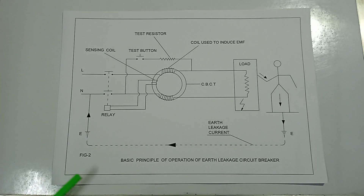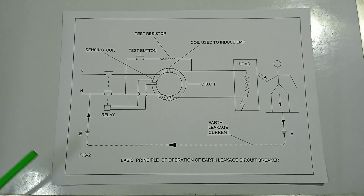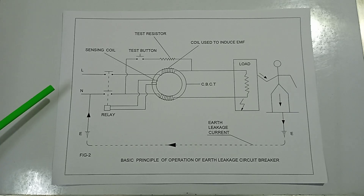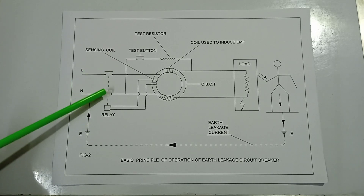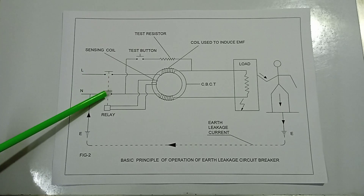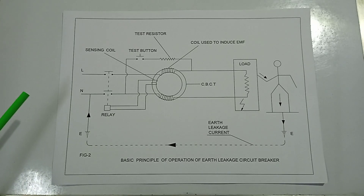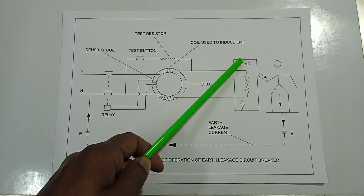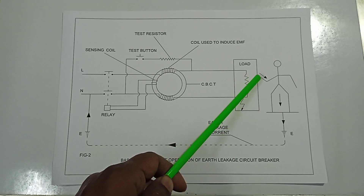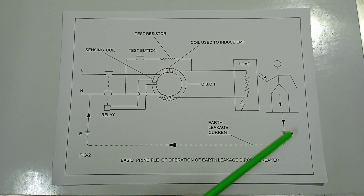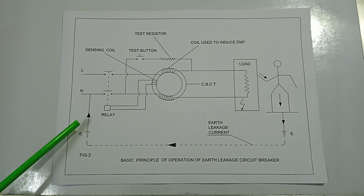Figure 2 shows the basic principle of operation of an earth leakage circuit breaker in a double-pole configuration, with line and neutral conductors, the relay, and the breaker contacts. When an earth fault occurs — for example, when a human touches a live conductor — the current passes through the earth and returns to the neutral, creating an imbalance in the primary circuit of the current transformer.